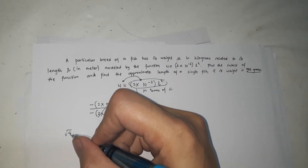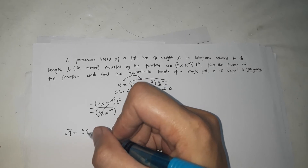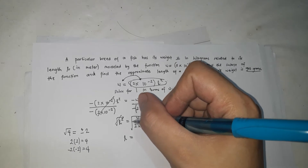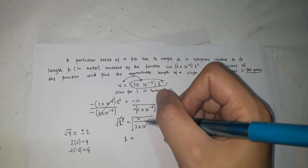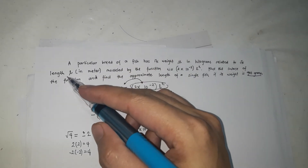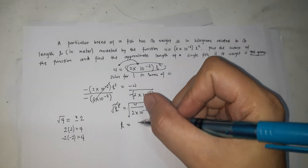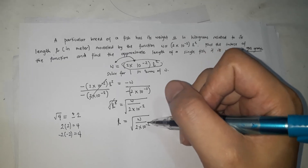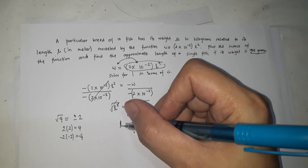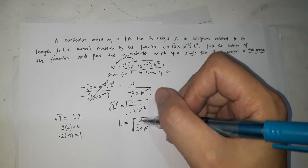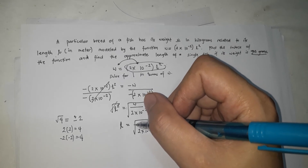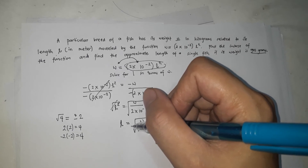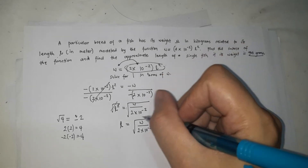Taking the square root normally yields ± answers — for example, √4 = ±2, since both (+2)² and (−2)² equal 4. However, since l represents length, there is no such thing as a negative length, so we only consider the positive value. This also confirms it is a one-to-one function: every value of l corresponds to exactly one value of w.